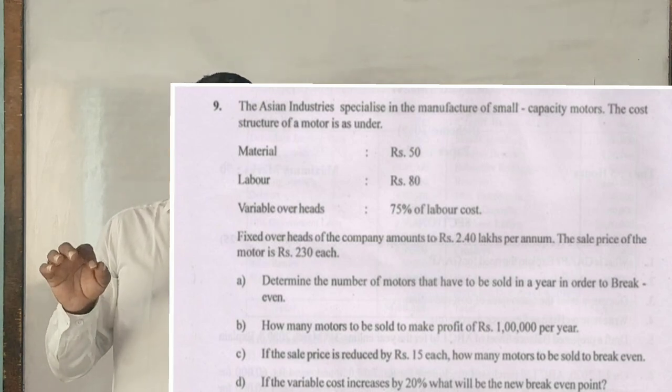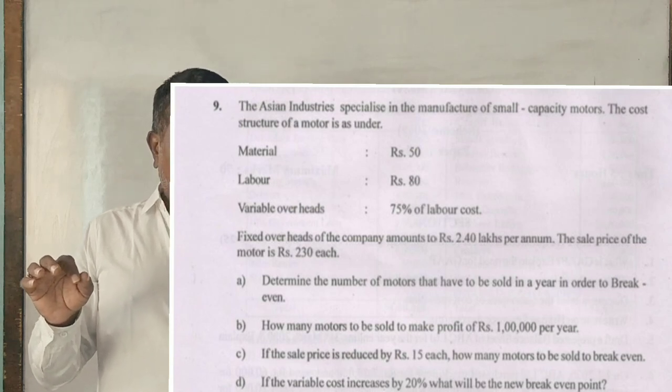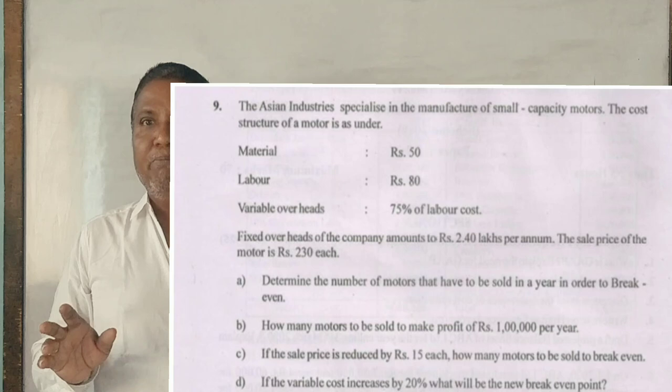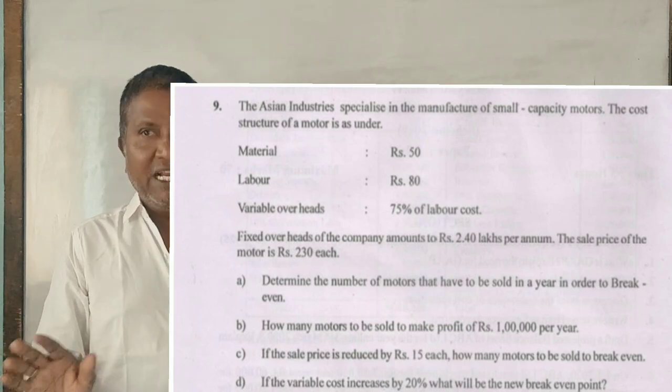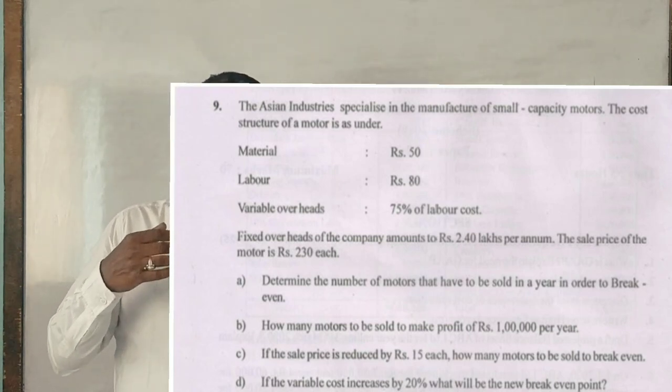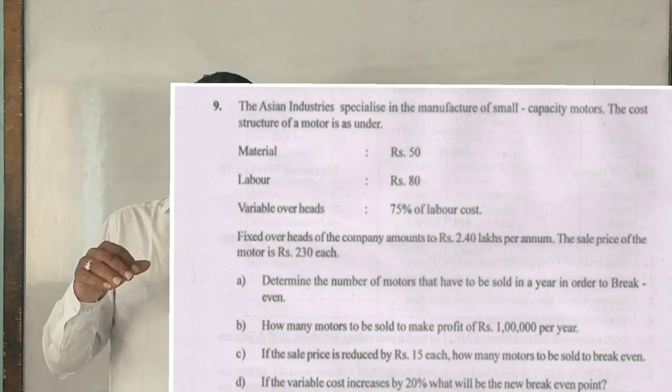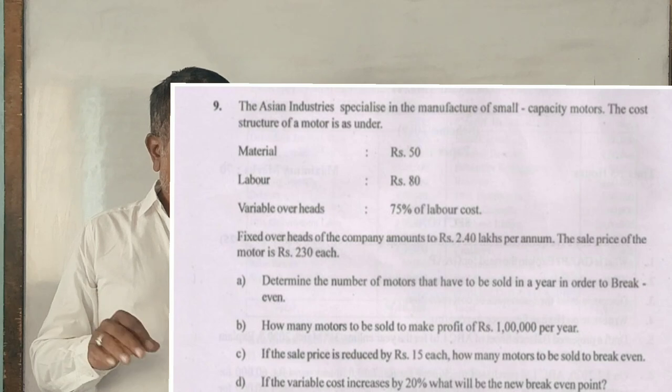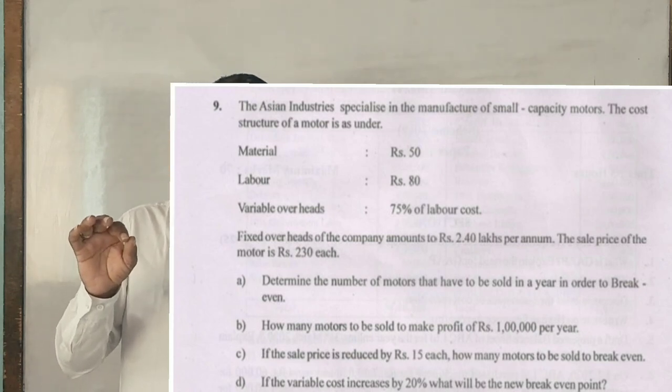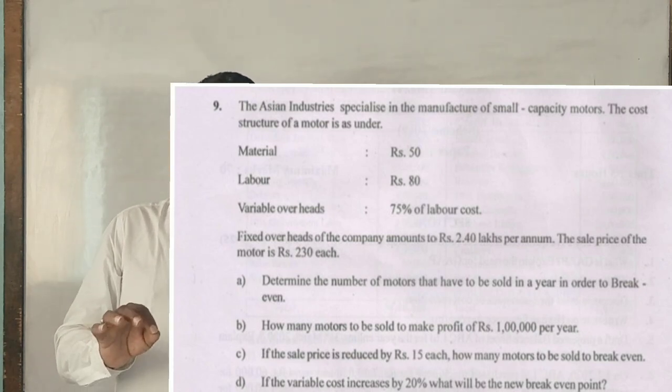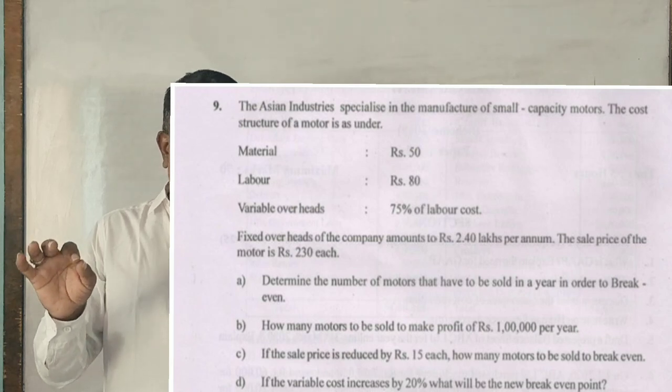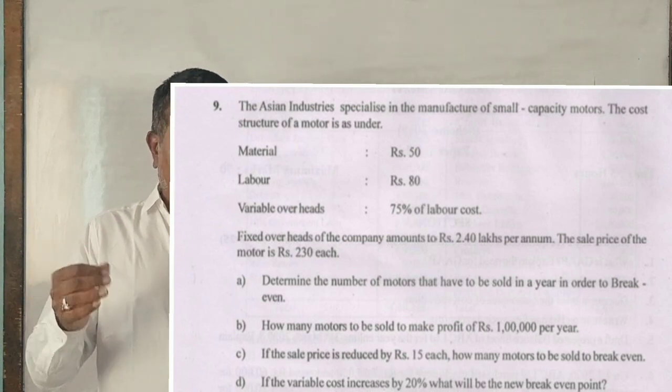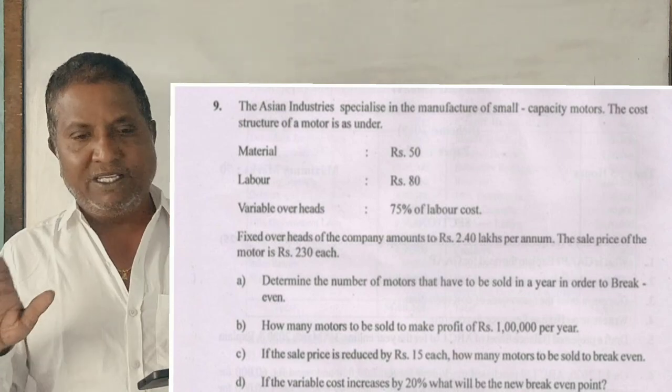Determine the number of motors that have to be sold in a year in order to break even. How many motors to be sold to make a profit of Rs. 1 lakh per year. If the sale price is reduced by Rs. 15 each, how many motors to be sold to break even. If the variable cost increases by 20%, what will be the new break even point.